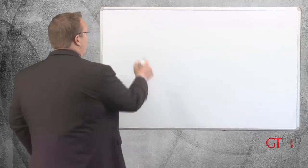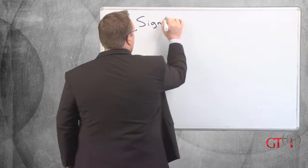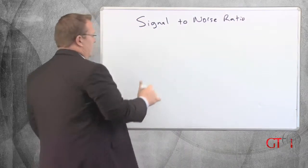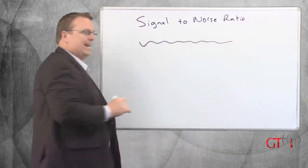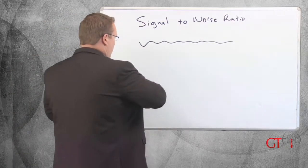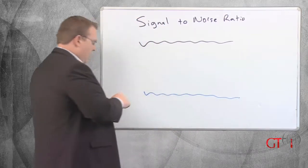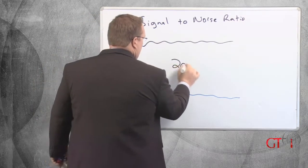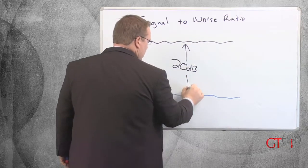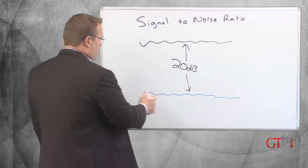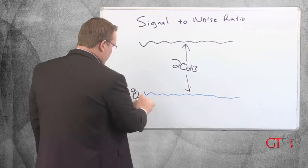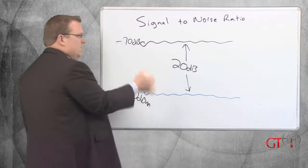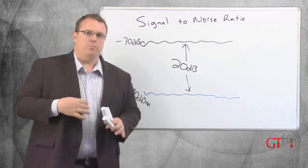Now signal-to-noise ratio is fairly simple. We look at a signal versus an amount of noise and we compare the two. Signal-to-noise ratio is in decibels, dB. So we could say there is a 20 dB difference between the signal and the noise. Maybe our noise is negative 90 dBm, our signal's negative 70, so we have a 20 decibel difference.